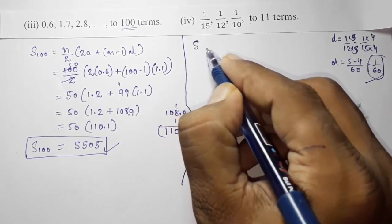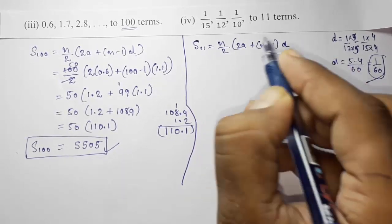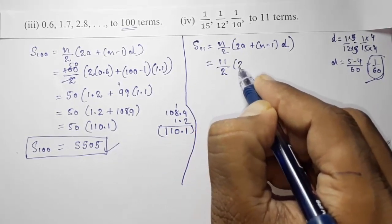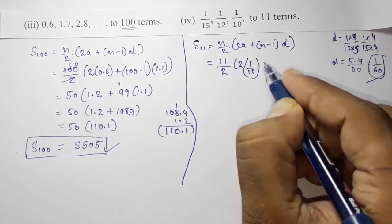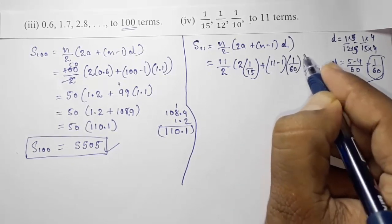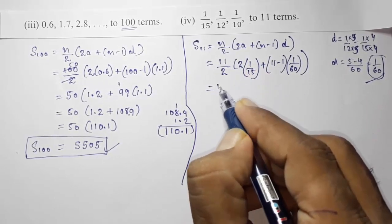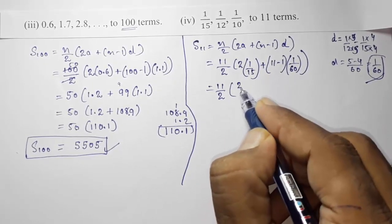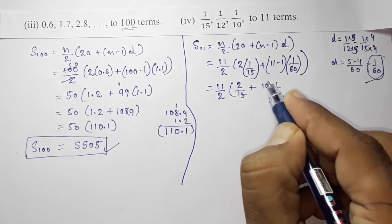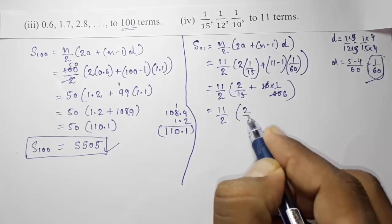We want to find S11. Using the formula: S11 = 11/2 × (2×(1/15) + (11−1) × (1/60)). First compute 2 × (1/15) = 2/15, and 10 × (1/60) = 10/60 = 1/6. So S11 = 11/2 × (2/15 + 1/6).